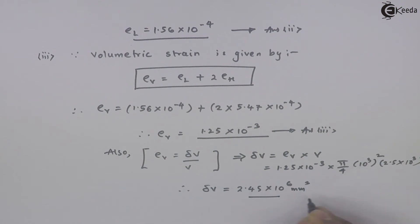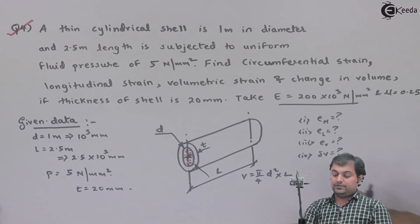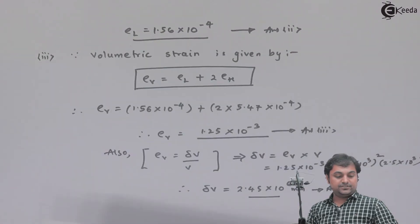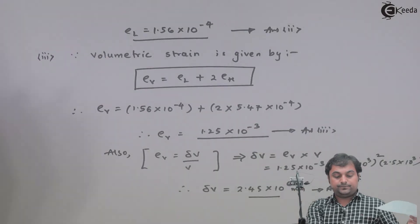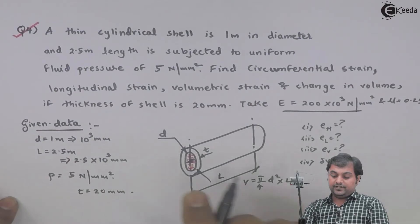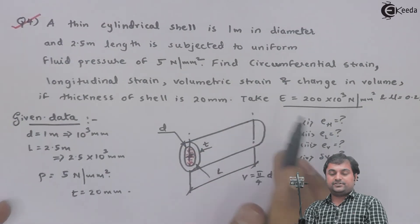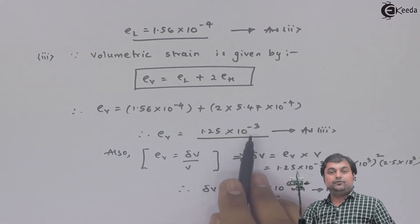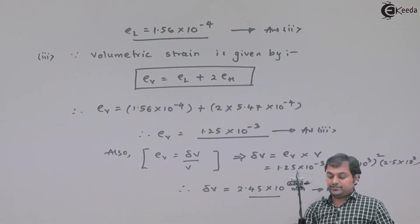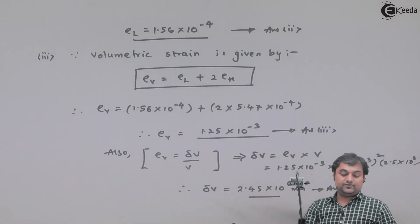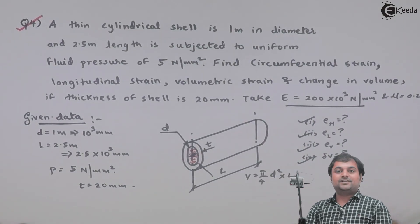So looking into this question: hoop strain = 5.47×10⁻⁴, longitudinal strain = 1.56×10⁻⁴, volumetric strain = 1.25×10⁻³, and change in volume = 2.45×10⁶ mm³. With this we have solved all the questions given, and problem number 4 is completed.